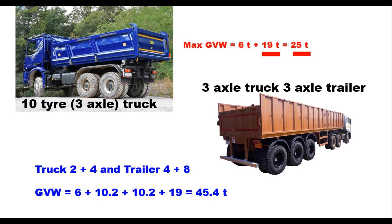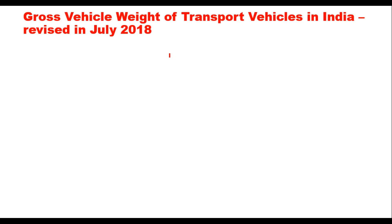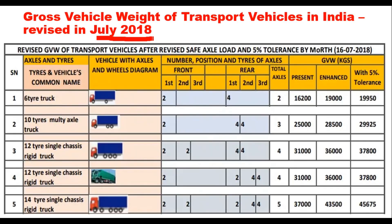These weights have recently been revised by the Ministry of Road Transport and Highways through a notification published in July 2018. For the six-tire truck, the earlier gross vehicle weight of 16.2 tons has been enhanced to 19 tons with a 5% tolerance, meaning the maximum gross weight can be up to 19.95 tons.